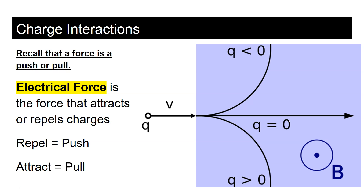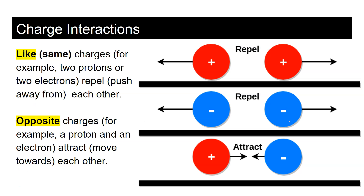A force, as we defined in our forces and motion unit, is a push or pull. An electrical force is the force that attracts or repels charges. Repel means to push things away; attract means to pull things closer. Like charges — for example, two protons or two electrons — repel each other. Two protons will push each other away, and two electrons will push each other away, as shown here.